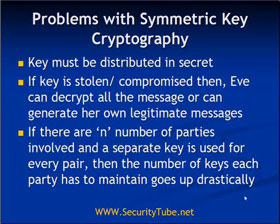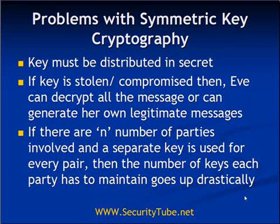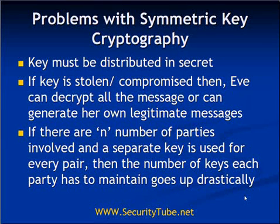Listing the problems with symmetric key cryptography: first, the key must be distributed in secret, and there is no key management mechanism explained in the algorithm. Second, if the key is stolen or compromised, Eve can decrypt all messages transferred between Alice and Bob, or even generate his own legitimate-looking messages, and neither party will know whether a message is from the trusted party or from Eve. Third, if there are n parties involved, a separate key must be shared for every combination, so the number of keys each party must maintain grows drastically, making key management itself a major problem.